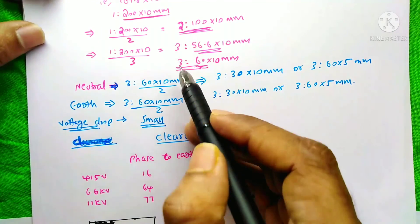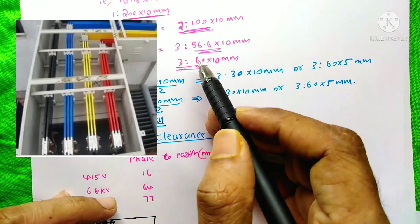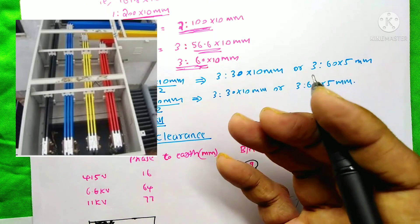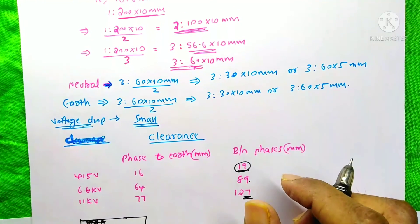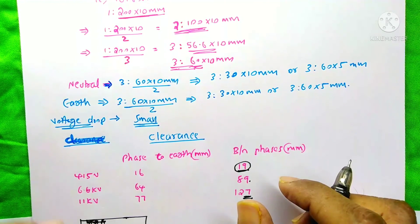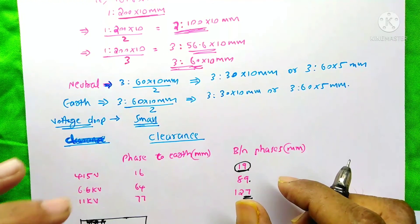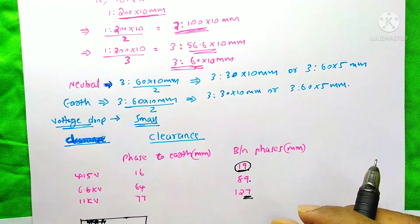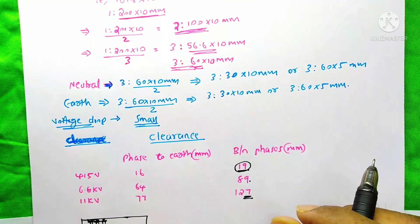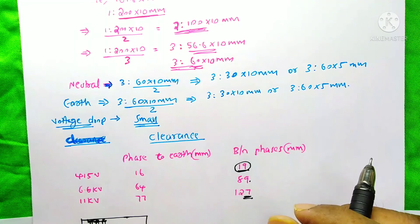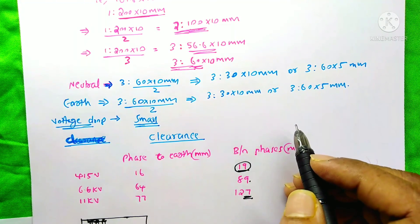One more thing: if your system has two or three bus bars per phase, each bus bar is stacked on top of the other. I hope you got some valuable information through this video. If so, please like and share. If you want more videos like this, please subscribe and press the bell icon — it will be a great motivation for me. Thanks for watching.